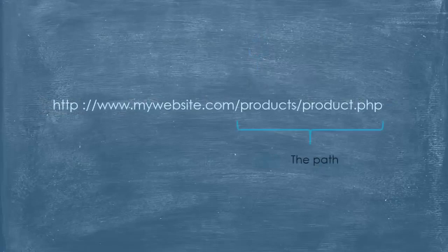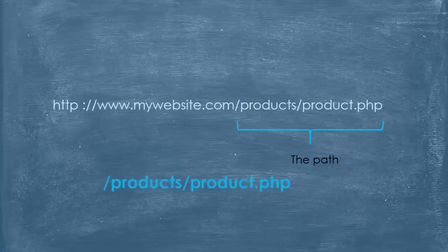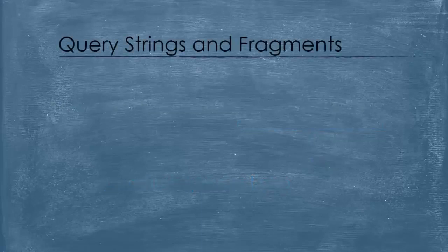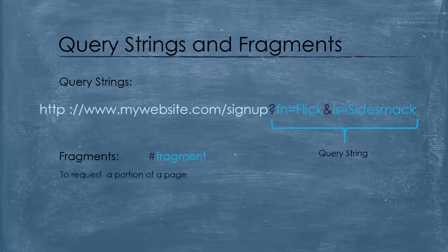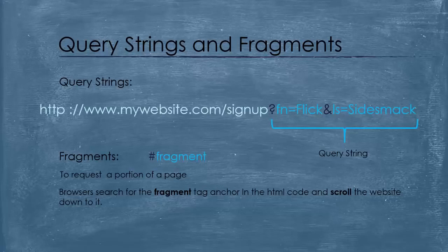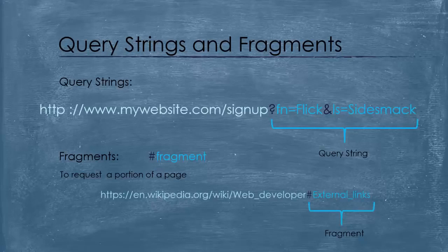The next part of the URL is the path, and it is optional. This is a familiar concept to anyone who has ever used a computer file system, and it is a way to locate the resource on the server. There can be other parts, which are query strings and fragments. Query strings are a way of passing information from the client to the server, such as entering information in a user form input. They are preceded by a question mark and they are encoded as key-value pairs, delimited by an ampersand symbol. Fragments are always at the end of the URL. You can identify a fragment by the hash symbol before it. They are used as a way of requesting a portion of a page — browsers will see the fragment tag anchor in the HTML code and scroll the website down to it. For example, this is a URL that contains a fragment from the Wikipedia website.